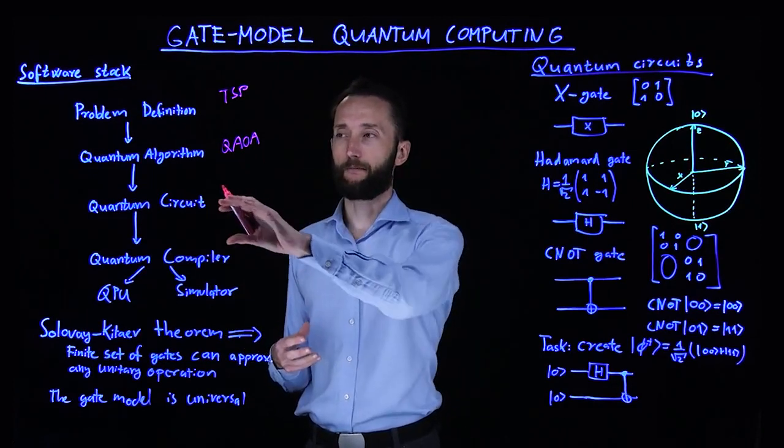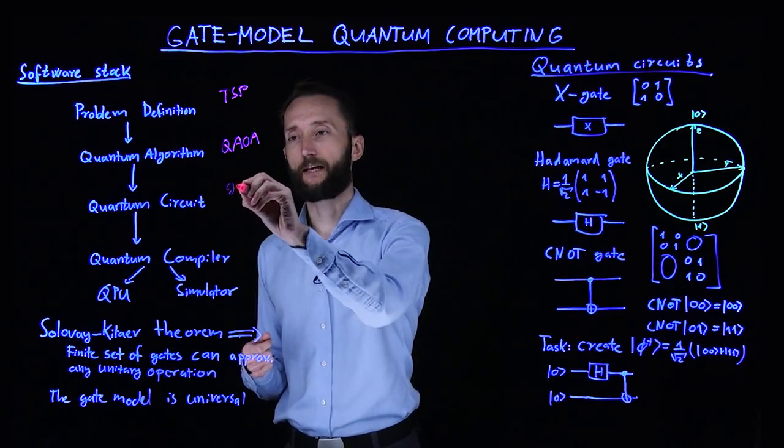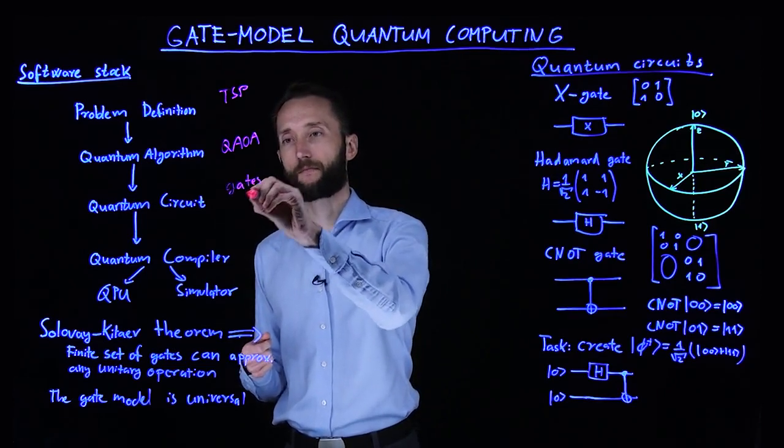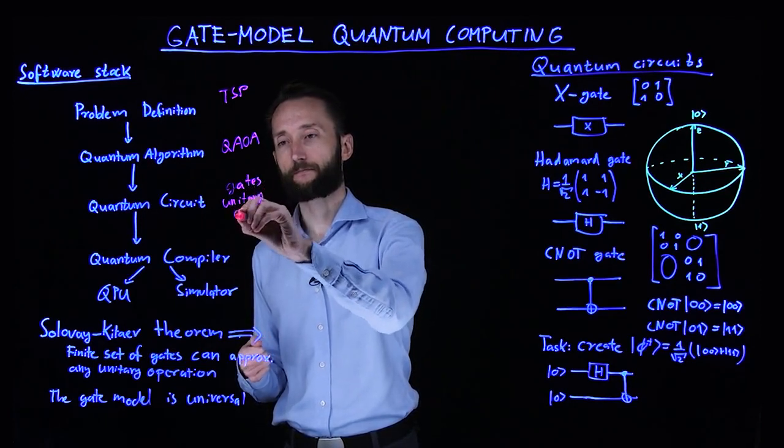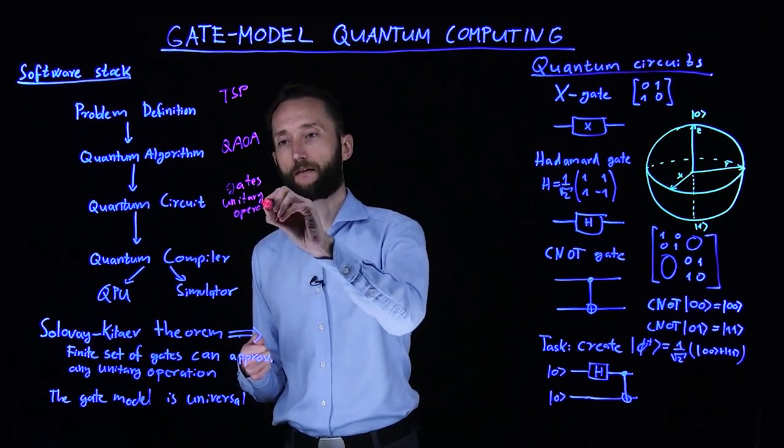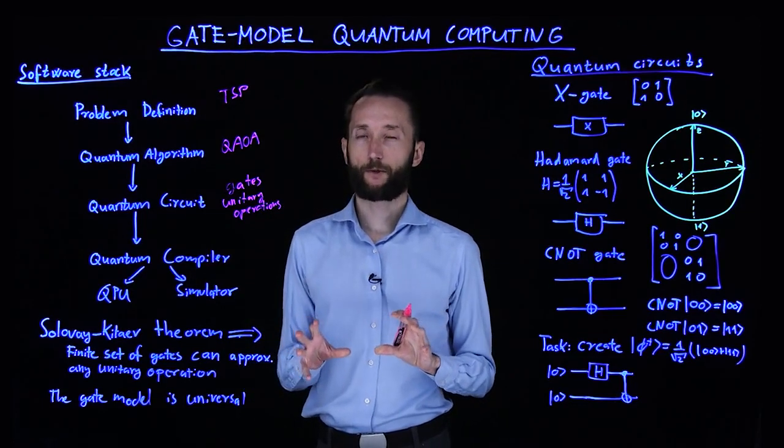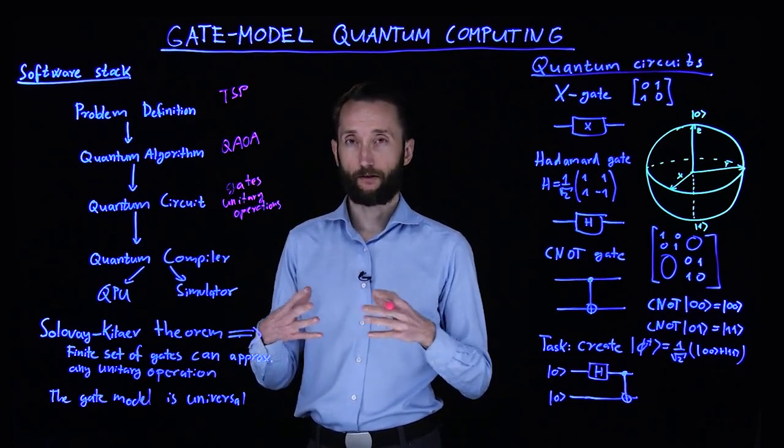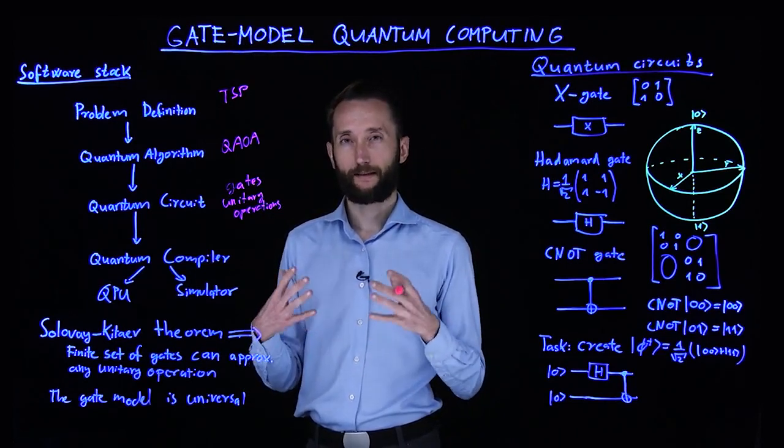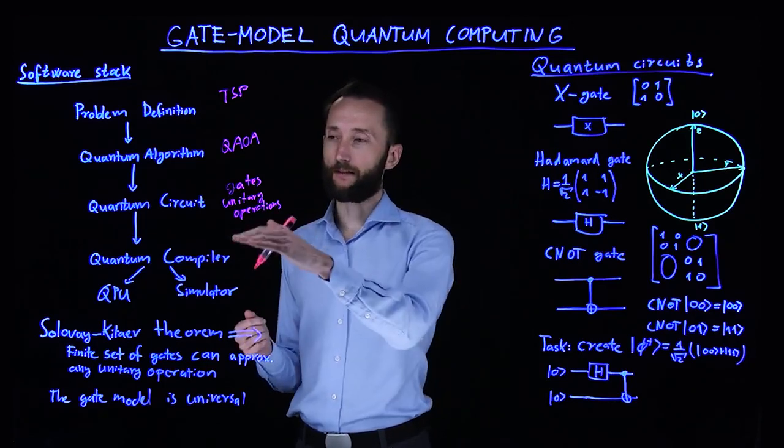This algorithm eventually splits into a quantum circuit consisting of gates, unitary operations. This is already a very low level description. If you are familiar with how a digital circuit decomposes, that's basically the level of what we are talking about here. But below this level, there's actual compilation going on.